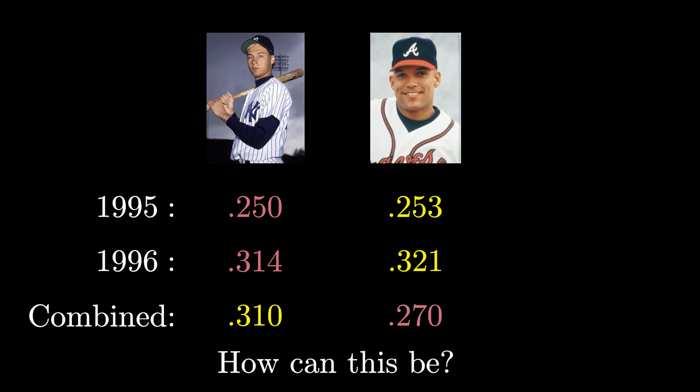Things might make a bit more sense if we look at where the averages come from. Jeter went 12 for 48 in 1995 and 183 for 582 in 1996, while Justice went 104 for 411 in 1995 and 45 for 140 in 1996. So Jeter had far more attempts in 1996 when they both had better yearly averages. The discrepancy in the denominators can make a difference.